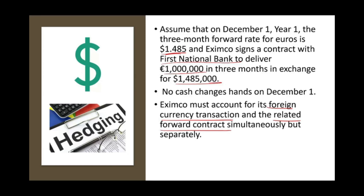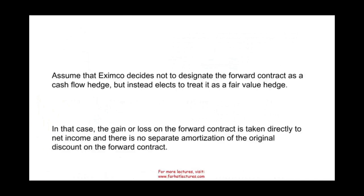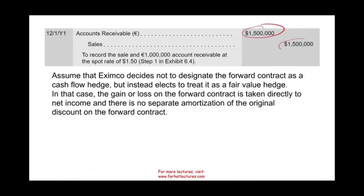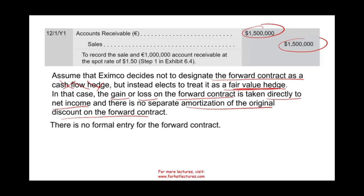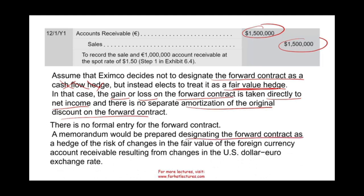We book the transaction: debit receivable $1,500,000, credit sales $1,500,000. The company decides to treat the forward contract as a fair value hedge rather than a cash flow hedge. This means gains and losses on the forward contract go directly to net income, with no amortization of the original discount. There is no formal entry for the forward contract at inception. Instead, a memorandum is prepared designating the forward contract as a hedge of the risk of changes in the fair value of the foreign currency receivable. This documentation is very important to qualify for hedge accounting.